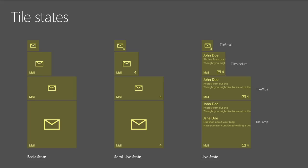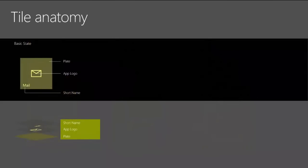The live state is where information comes out of your application — it's going to be different for every app. A weather app delivers weather; yours might deliver something else. I've seen enterprise applications that deliver snapshots of graphs — inventory levels from the warehouse, for example. You can have several tiles on your start screen from the same application, each showing different graphs, creating a personalized free dashboard.